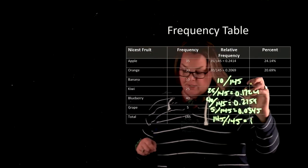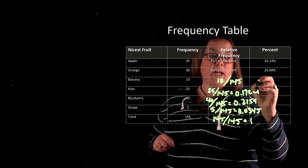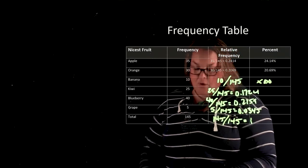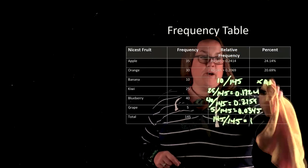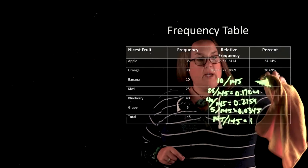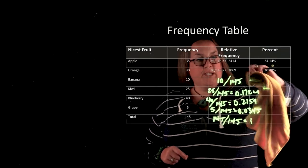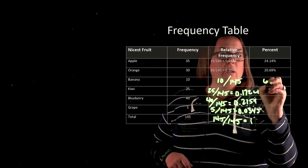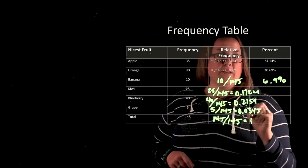Now here in the percent column, again all I'm going to do is multiply each of these by 100. So if I carry this decimal value out for the banana cell, it came out to be 0.069, and you can check that work if you don't believe me, and we have 6.9 percent then.